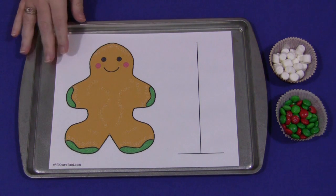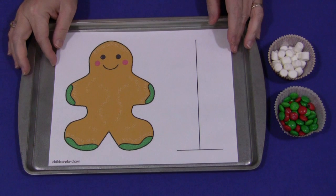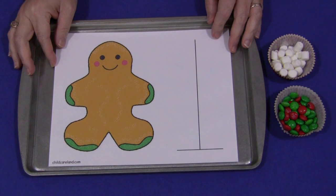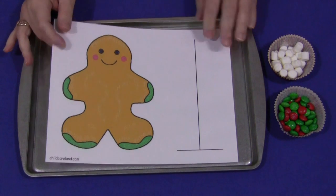You need to have this pattern, which can be found on my website at ChildCareLand.com underneath the video section, and you would just print it off on cardstock paper and laminate it.